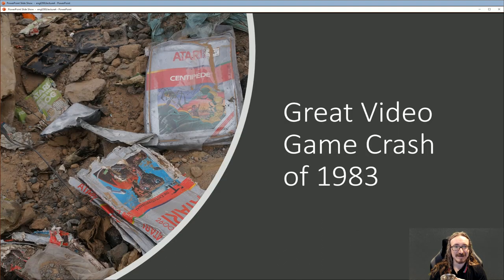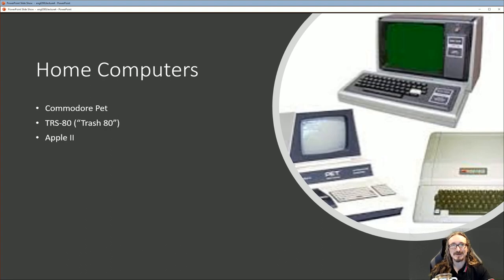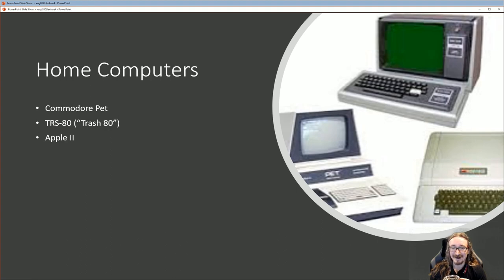People weren't buying consoles because they could get computers for about the same price and the games were just about as good — that was the argument. And then there's the issue of licensing: they spent so much money on it, thinking that just because E.T. was a huge movie, any game with that logo was going to do well. Of course it sold like gangbusters, but then people got it home and found out it's really just a crappy game. We still see this today — a game based on the latest hit movie where people rush out to buy it and then find out it's not anything great. There's even a game based on Beethoven the dog. Most licensed games are crap.